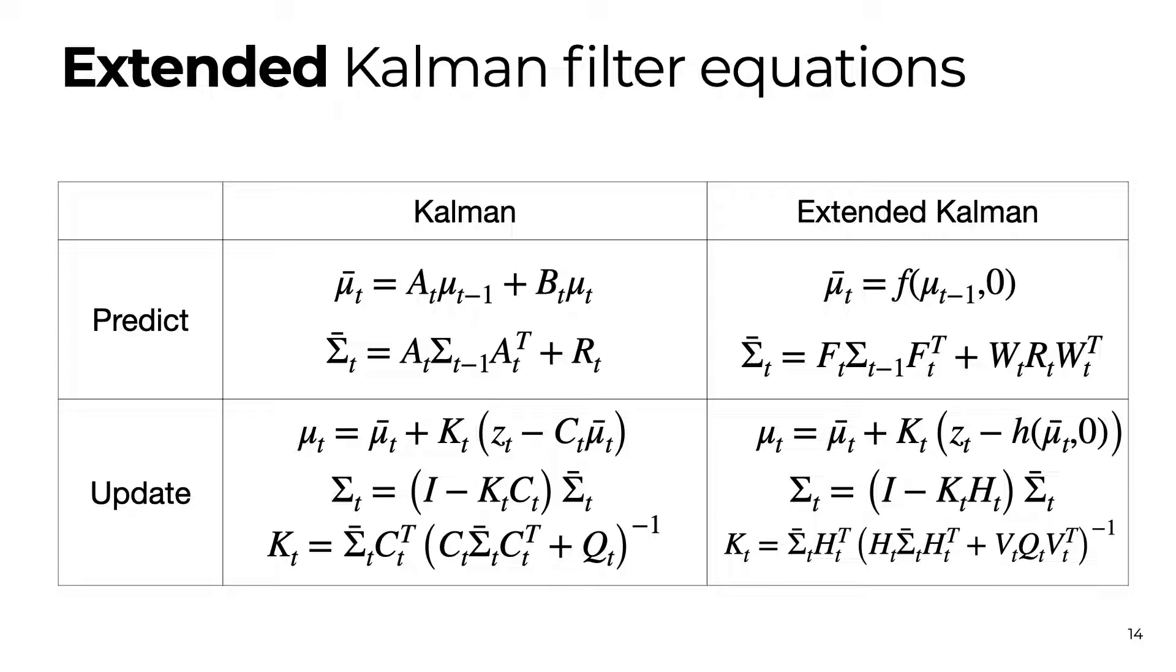Once we have these matrices, we can apply the same equations as we did for the Kalman filter. We can still feed our mean through the nonlinear process and measurement models, but everywhere that we needed the matrices of the linear model for the Kalman filter, we can replace them with the associated Jacobian matrices.